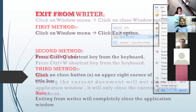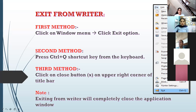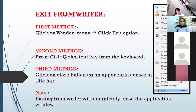Now the next topic is how to exit from the writer. I want to close the application itself, terminate the application. The methods are: file menu exit option, Ctrl+Q is the shortcut key, and the close button on the upper right corner of the title bar. It will completely close the application window. Remember: shortcut key for closing the document is Ctrl+W, and shortcut key for exiting the writer application is Ctrl+Q.